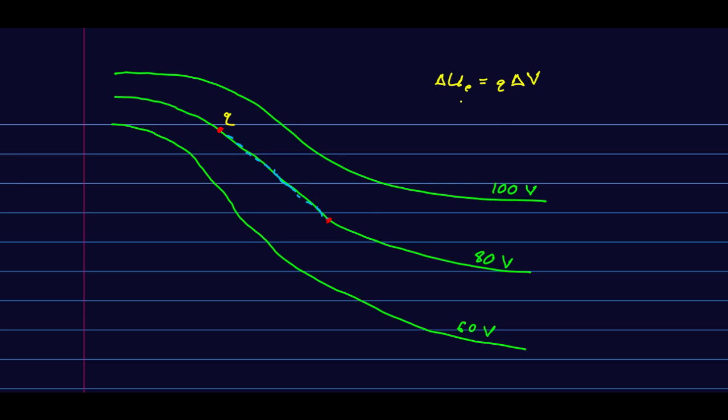That means delta U was zero along this line. But we also know that's equal to the negative work by the electric force. So the electric force must have done no work as we walked along this line. We know what that means. When a force does no work at all, that means the force is perpendicular to the direction of motion. So the field vectors must be perpendicular to the equipotential curves at all points, and they are strong where the lines are close together and weak where the lines are far apart.